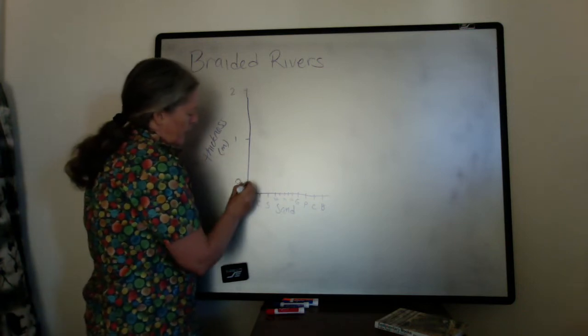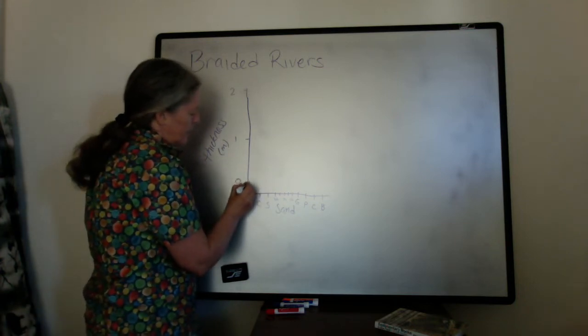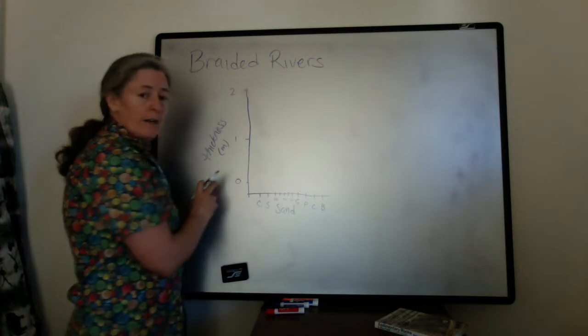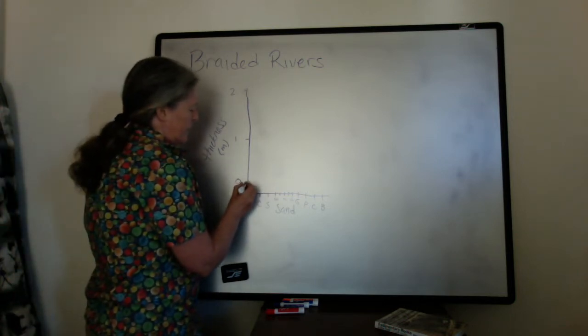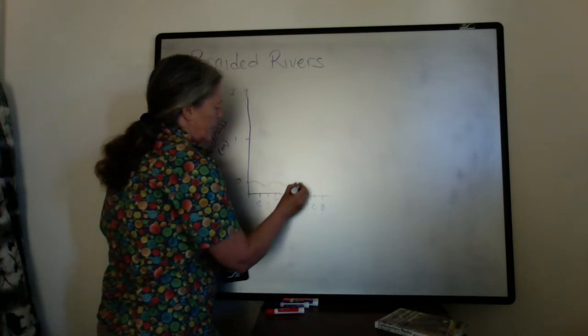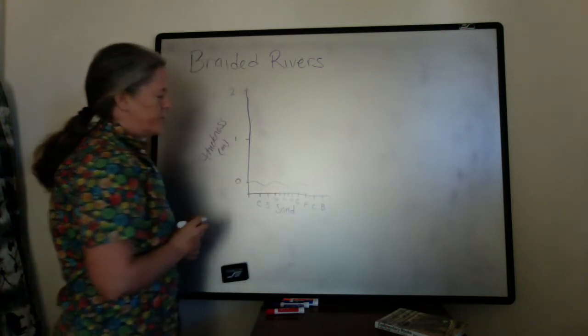And so if we plot a typical sequence of rocks starting with zero at the base of a channel, it's eroding the bar on one side. So it's usually an erosional surface.